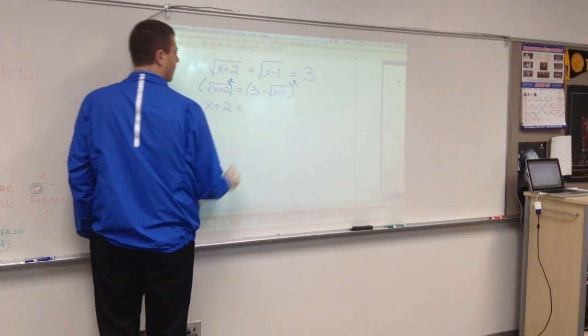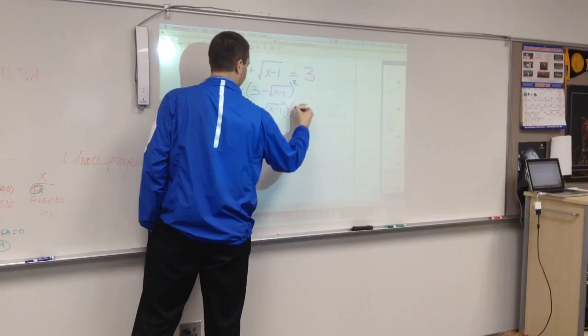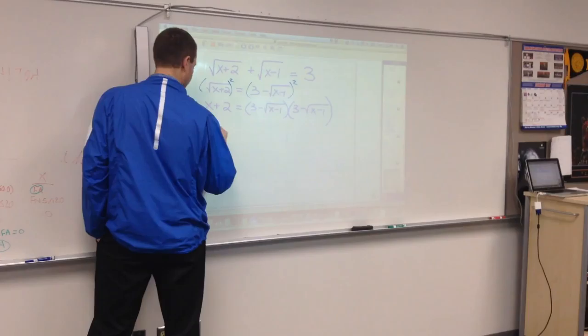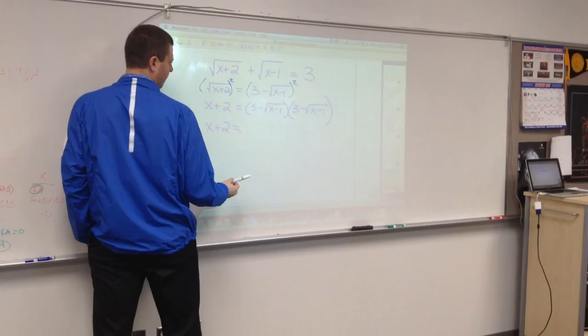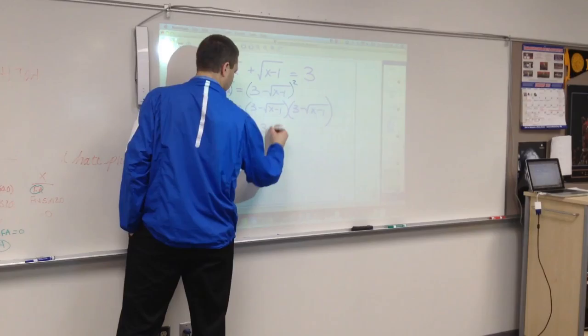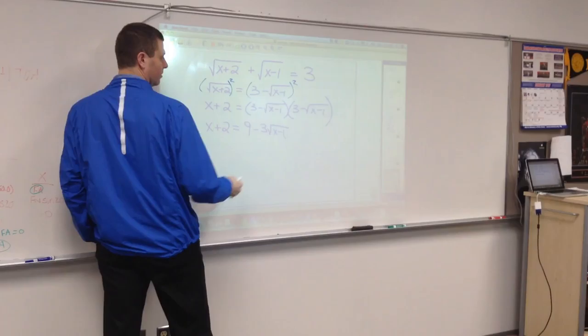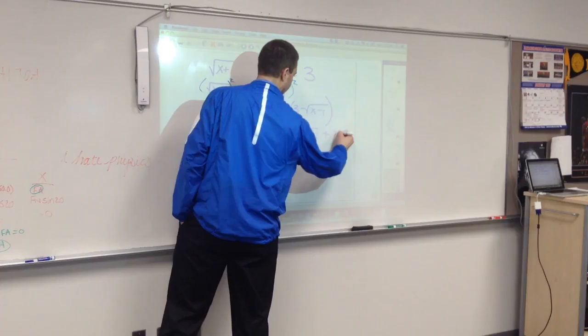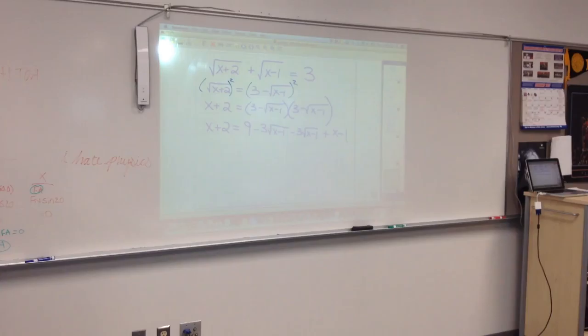The right side is going to take a foil or a distributive property here. I have to take that entire side times itself. So, what do I got? 9. 3 times a negative square root of x minus 1 is simply minus 3 square roots of x minus 1, minus another 3 square roots of x minus 1, plus x minus 1. Because the square root of x minus 1 times the square root of x minus 1 is simply x minus 1.